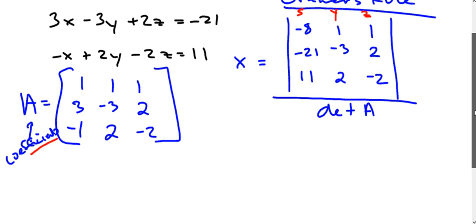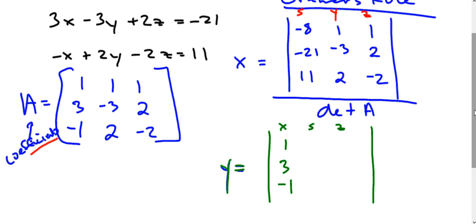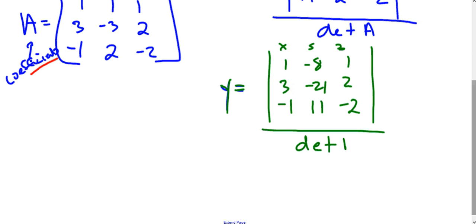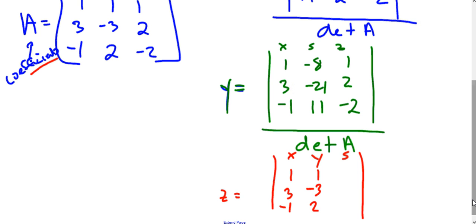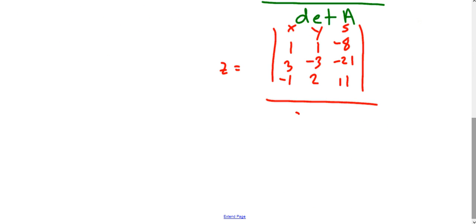We're going to do the same thing for y and z. For y, we replace the y column with the solutions: x column stays as 1, 3, -1; solutions column is -8, -21, -11; and z column is 1, 2, -2. For z, we replace the z column: x column is 1, 3, -1; y column is 1, -3, 2; and the solutions column is -8, -21, and 11. Each of these gets divided by the determinant of A.